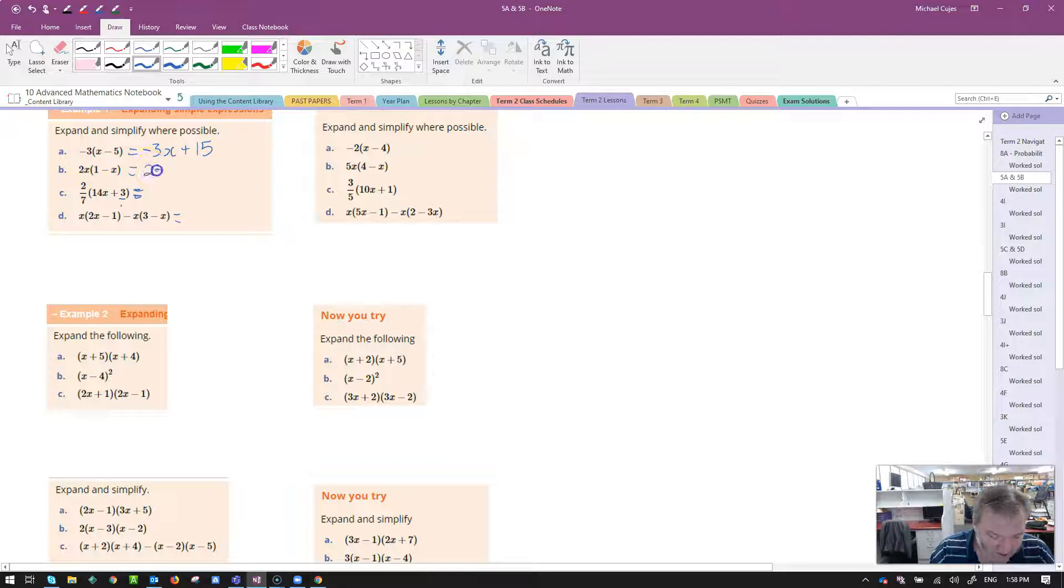Let's have a look at the next one. 2x times 1, that's just 2x. 2x times negative x, positive times a negative is a negative. So it's 2 times 1 is 2, and x times x is x squared.